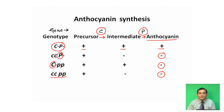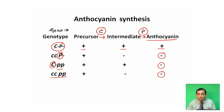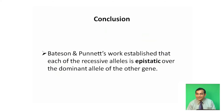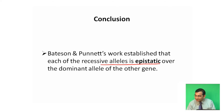The explanation provided by Bateson and Cunet is that the recessive locus cc is epistatic over the dominant element P, while recessive pp is also epistatic over capital C. Bateson and Cunet's work established that each of the recessive alleles is epistatic over the dominant allele of the other gene.